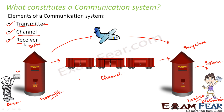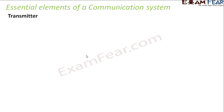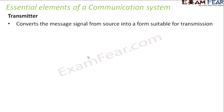If you want to transfer information over a large distance, you must have a device acting as a transmitter, you must have a channel, and you must have a receiver to receive the information. The transmitter and the receiver are located at two different places, and the channel acts as a medium connecting these two places. Let us look at these basic elements in more detail. The purpose of a transmitter is to convert the message signal from the source into a form suitable for transmission.